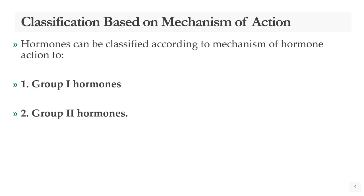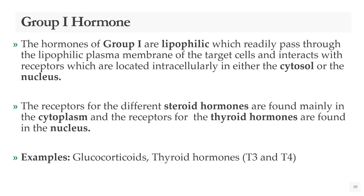Coming to the classification based on mechanism of action, hormones can be grouped into Group 1 and Group 2. Group 1 hormones are lipophilic and readily pass through the lipophilic plasma membrane of target cells. They interact with receptors located intracellularly — either in the cytosol or in the nucleus. Receptors for steroid hormones are found mainly in the cytoplasm, while receptors for thyroid hormones are found in the nucleus. Examples include glucocorticoids and thyroid hormones.